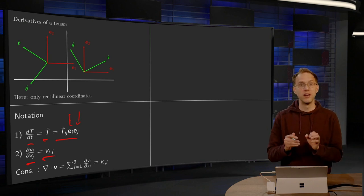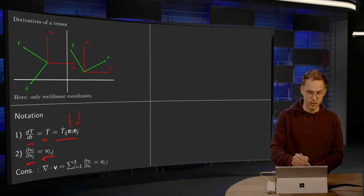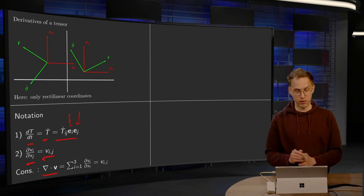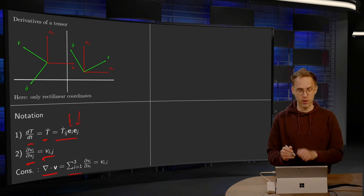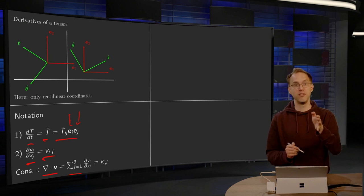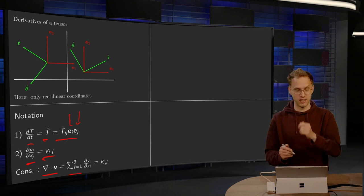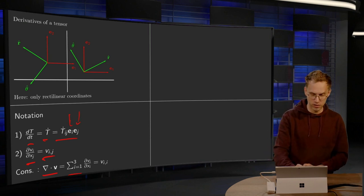So the divergence of v, what is that? Well, you have to sum over the three components, and then compute dv_1/dx_1 plus dv_2/dx_2 plus dv_3/dx_3, which we have over here.